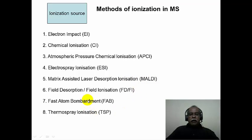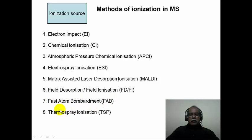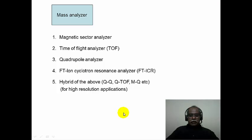Other less commonly used techniques include field desorption or field ionization, and fast atom bombardment (FAB), where xenon atoms are bombarded onto the substrate, causing ionization and producing a mass spectrum. Thermospray ionization is also related to electrospray ionization and is a known but less widely used technique.